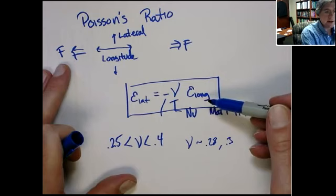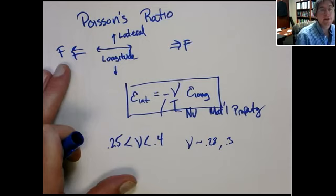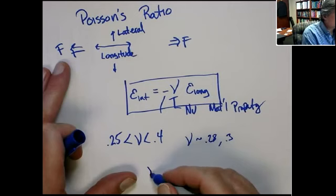Typically the way the problem is stated: given the strain in the longitudinal direction — the direction of the pull — and then using Poisson's ratio, you can figure out the strain in the other directions.